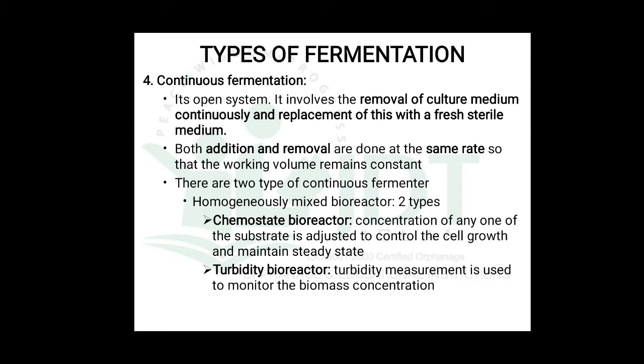The fourth type is continuous fermentation, an open system in which culture medium is removed constantly and replaced with fresh sterile culture media. Both addition and removal are done at the same rate so that the working volume remains constant. This allows us to constantly produce the end product and increase the yield of the fermentation process. There are two types of continuous fermentation: chemostat bioreactors and turbidostat bioreactors.